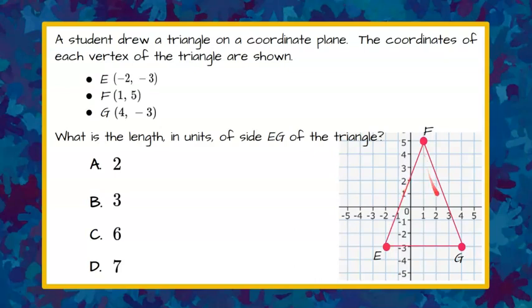So each one of these, E, F, G, is the vertex forming the angle of the triangle. And we've got to go back and we're asked, what is the length of side EG of the triangle?